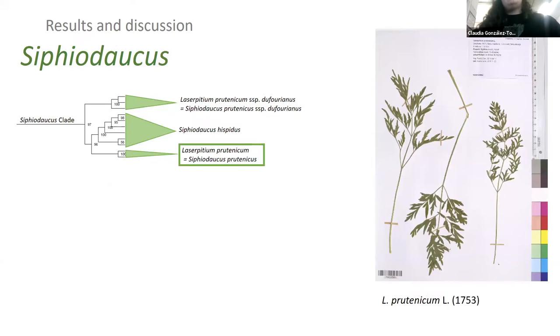If we look at the Siphidaucus clade, this becomes interesting. The Siphidaucus clade was described recently based on molecular methods, and the type clade was the formerly known Laserpitium prutenicum, now known as Siphidaucus prutenicus. In previous studies, this had only two clades, the type clade and the Siphidaucus hispanicus clade.